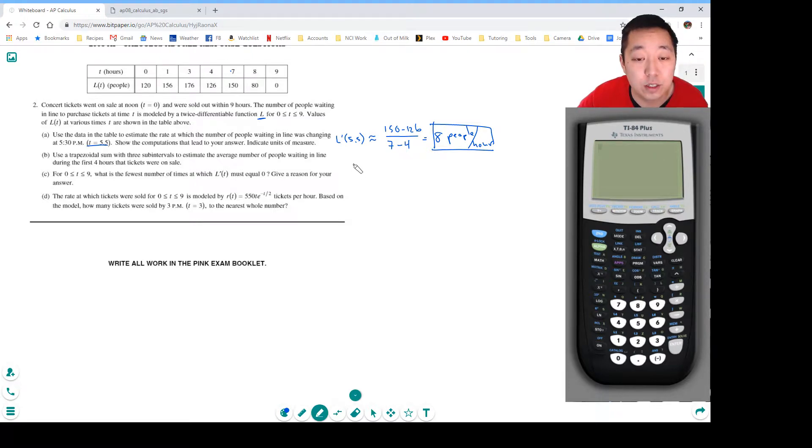So the average value is given by the integral from 0 to 4 of L of t dt over 4 minus 0. This is the standard average value formula.